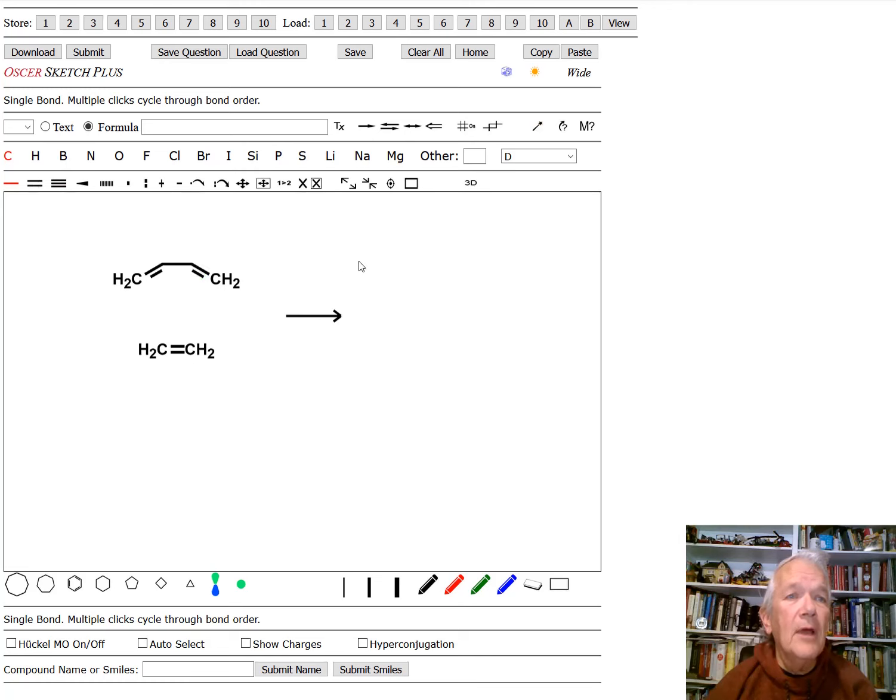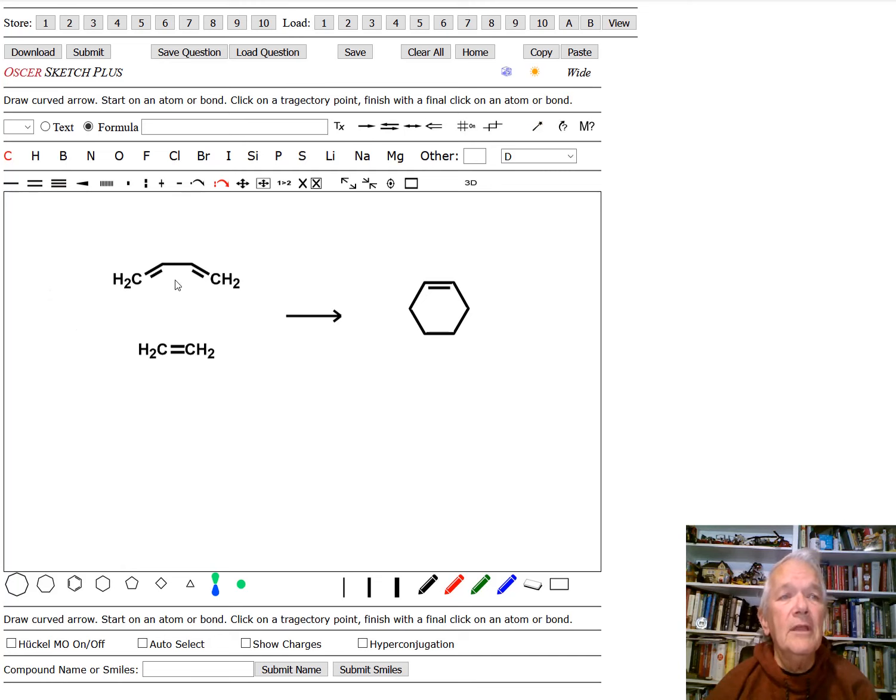We're going to do our reaction, and we're going to get our product, and our product in this particular case is going to be a six-membered ring with one double bond.